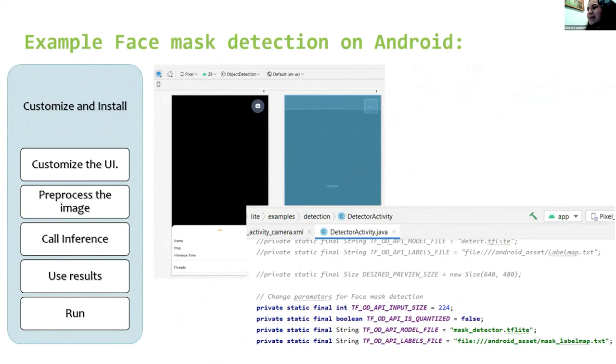And customize and install. We create or modify the user interface. We call the image classifier to review if it's a human face or not. Crop the image, classify the image with the model. Post-processing to use the results and run to install the application in the phone.